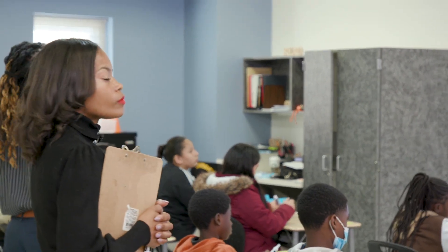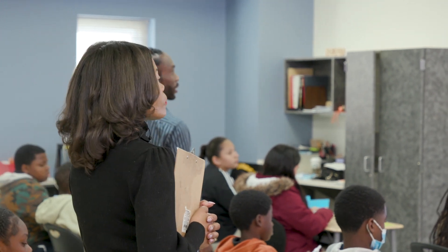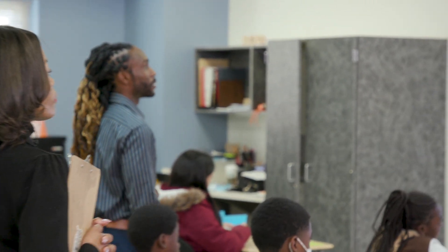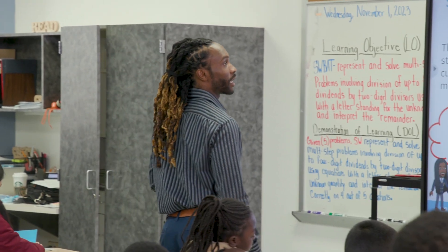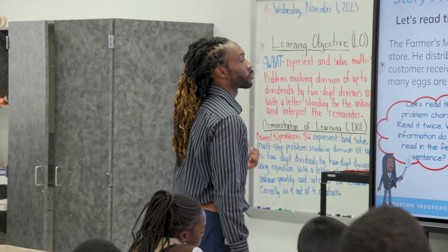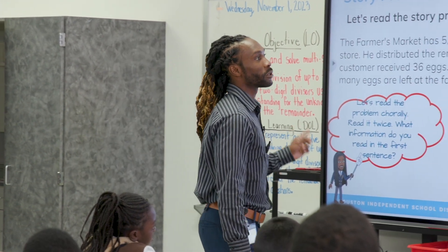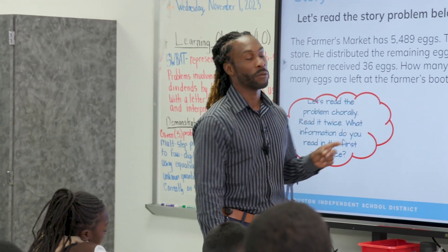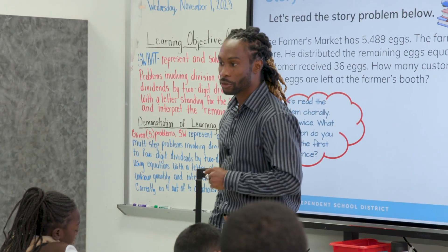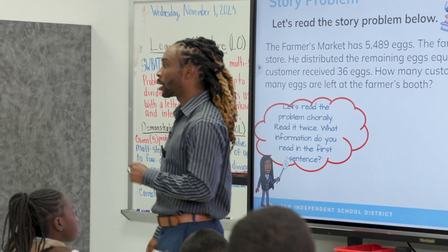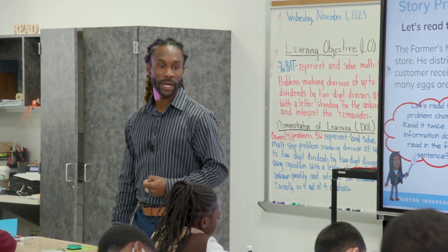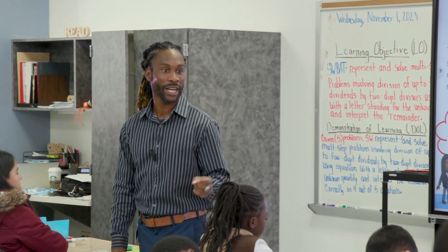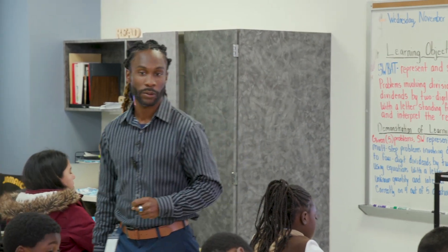The farmer's market has five thousand four hundred eighty-nine eggs. The farmer sold one thousand three hundred fifty eggs to a grocery store. You guys have 30 seconds — turn and talk to your partners. What's going on? What information do we have? Ready and go.